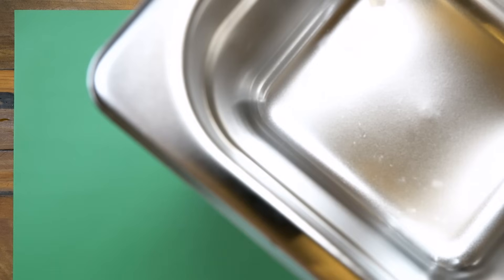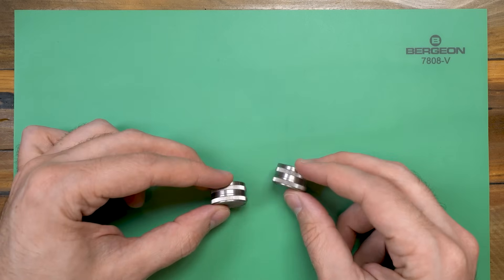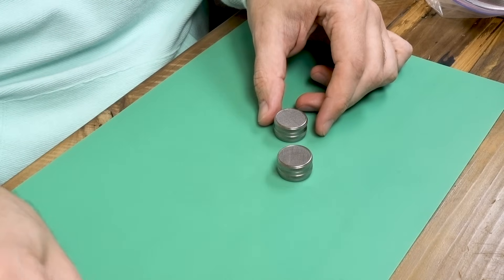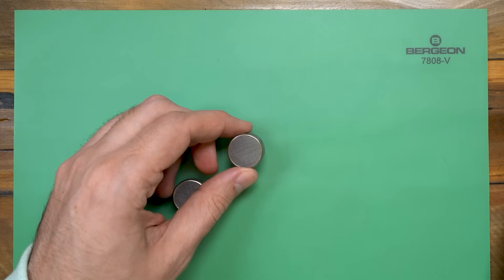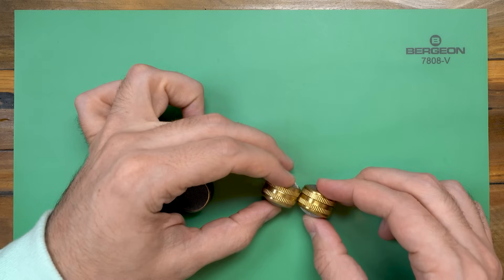To hold the small parts while they're being cleaned in the ultrasonic cleaner, some cleaning baskets are useful. The Bergeon ones are expensive, but very high quality. The cost is about $37 per cleaning basket. If those are out of range, however, you can get low quality brass ones for about $6.